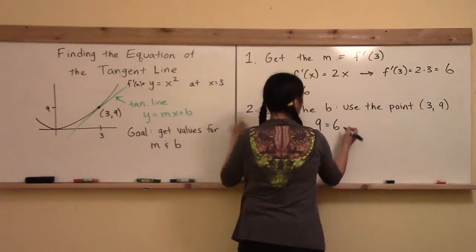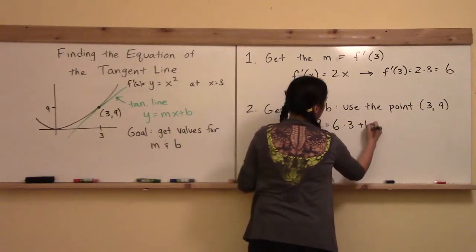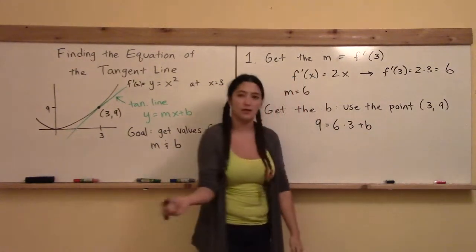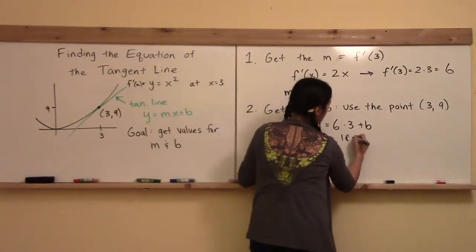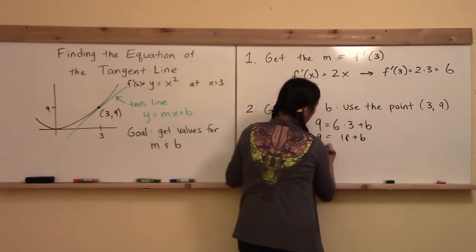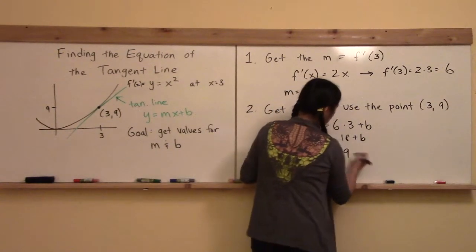And then the x there is 3, and then the only left unknown is b right there. I don't know what the b is, okay? So that's as easy as that. You can see that this is going to be 18 plus b is equal to 9, and so therefore, b is equal to negative 9.